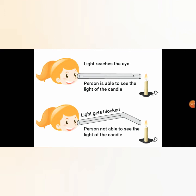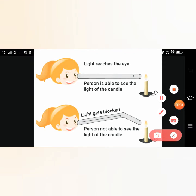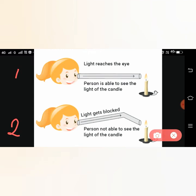In this activity there are two persons, two tubes, and two lighted candles. In the first case, the girl can see the flame of a candle because her tube is not bent. In the second case, if the tube bends, we cannot see the lighted candle because light travels in a straight line. In the first case, the tube is straight, so she can see the flame.